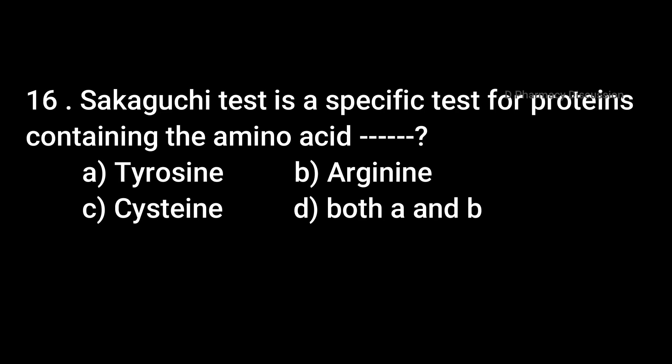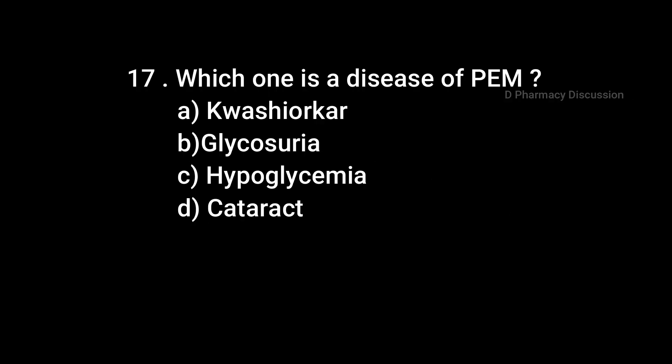Question 16: Sakaguchi Test is a specific test for proteins containing amino acid — Option A: Tyrosine, B: Arginine, C: Cysteine, D: Both A and B. Correct answer is Option B: Arginine. Question 17: Which one is a disease of PEM? Option A: Kwashiorkor, B: Glycosuria, C: Hypoglycemia, D: Cataract. Correct answer is Option A: Kwashiorkor. PEM means protein energy malnutrition, and Kwashiorkor occurs in children.